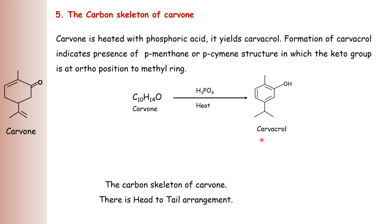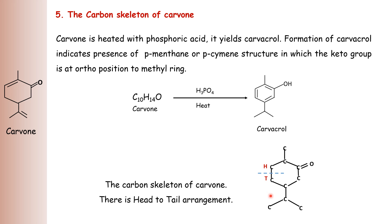Thus the carbon skeleton of carvone is established with a head-to-tail arrangement. As it is a monoterpenoid, there are two isoprene units and the head of one isoprene unit is joined to the tail of another isoprene unit. This is the head-to-tail arrangement in carvone and this is the carbon skeleton of carvone.